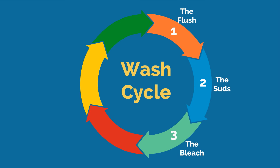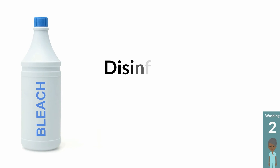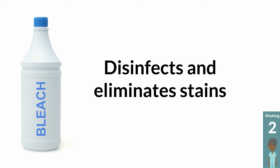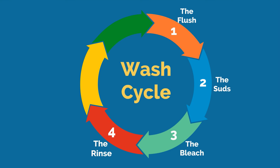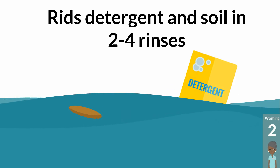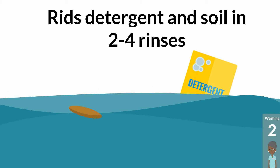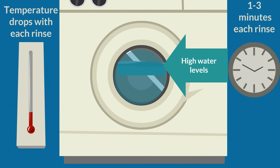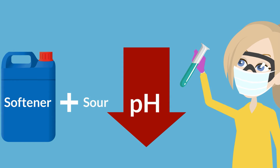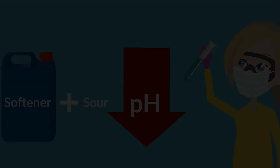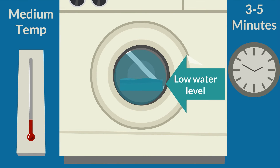The third wash step is the bleach. Bleach disinfects the items and eliminates stains not already removed by the detergent. Add bleach with a low level of water at hot water temperature for five to eight minutes. The fourth step is the rinse. Rinsing rids the items of detergent and soil in two to four rinse steps, with high water levels at water temperatures dropping with each rinse, lasting one to three minutes each. The fifth step is the soft and sour. Fabric softener and sour brings the pH down to a safe level for the fabrics, with low water level at medium temperature for three to five minutes.